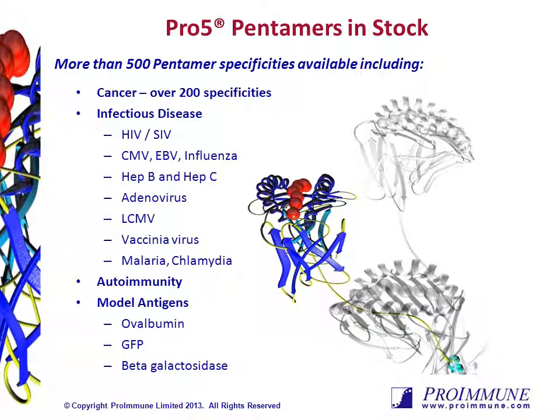Proimmune has a large catalogue of stock pentamers, including more than 500 specificities — over 200 related to cancer, and many related to infectious disease, autoimmunity, and model antigens such as OVA and beta-galactosidase. Our experienced customer service team can advise you on the best pentamer to use in your study, and can also advise on appropriate positive and negative controls where required.